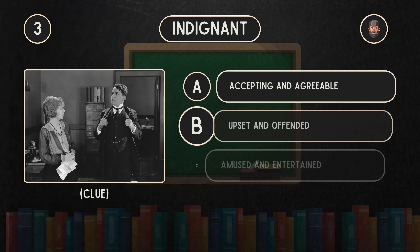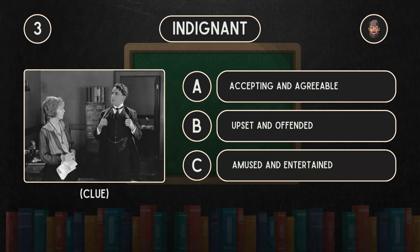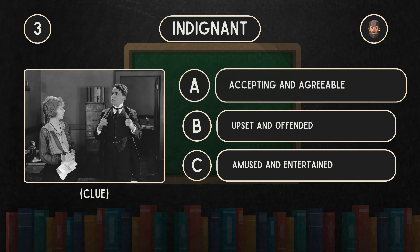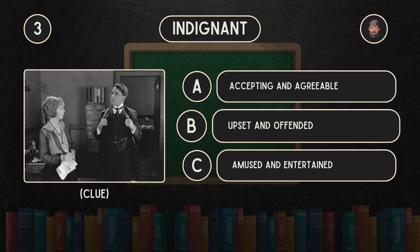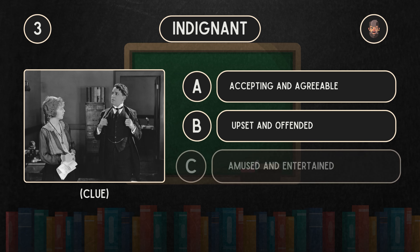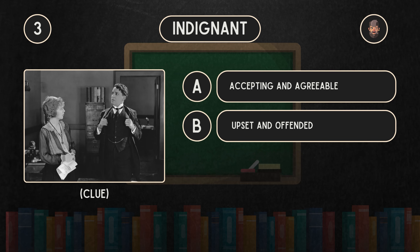What does indignant mean? Is it A: Accepting and agreeable. B: Upset and offended. C: Amused and entertained.